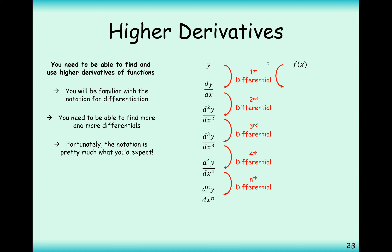In function notation, the first derivative is f'(x), the second is f''(x), f'''(x), f''''(x), and then f^(n)(x) for the nth derivative, rather than composing the function n times. You'll know from context whether it means the composite function or the derivative notation.